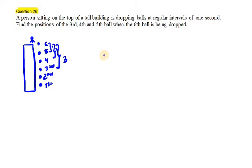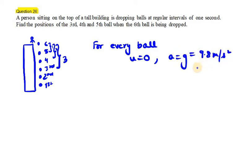So for every ball, first of all, u is 0, initial velocity is 0, and a will be g that is 9.8 meter per second square or you can take 10 meter per second square as well. Now in this case we need to find the position of third, fourth and fifth ball.